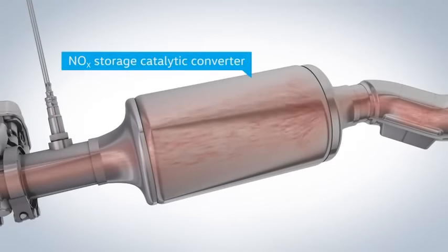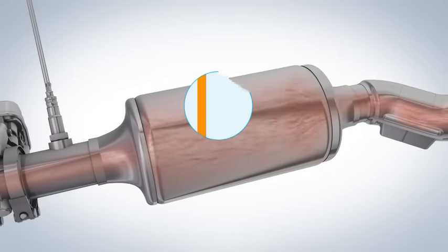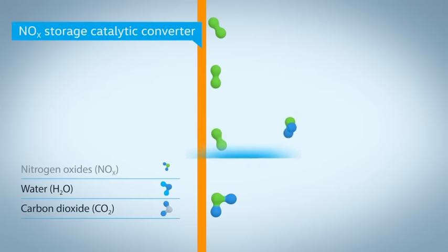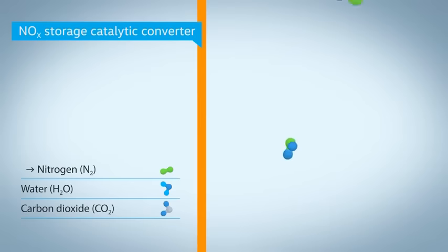One of them is the NOx storage catalytic converter, which stores the nitrogen oxides. When it is discharged, it releases CO2 and nitrogen, as it makes up 78% of our natural atmosphere.